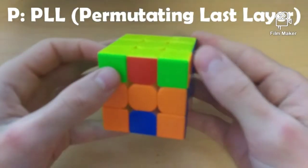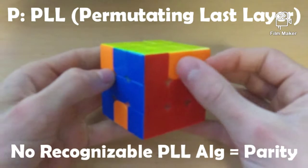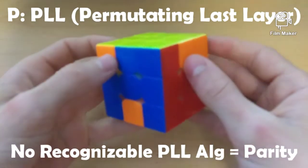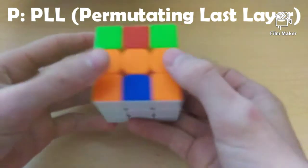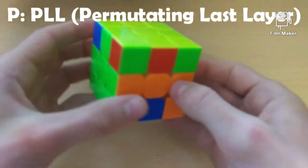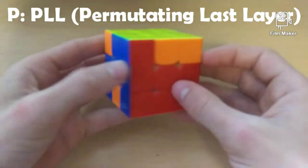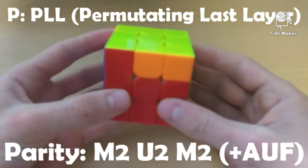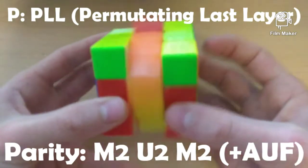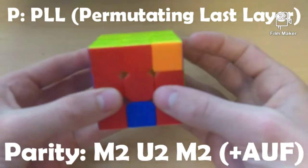So, right away, as you can see, we do not have a recognizable PLL case. And this means that we have parity. So, if you check the bottom, you can also tell that there is parity down here. So, we are going to hold the cube wherever and do the parity algorithm. M2, U2, M2, and then whatever AUF we need.